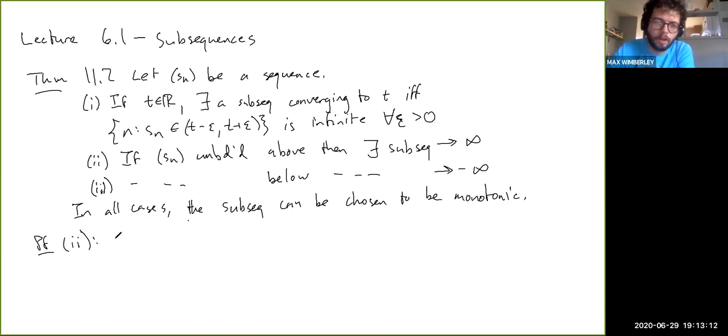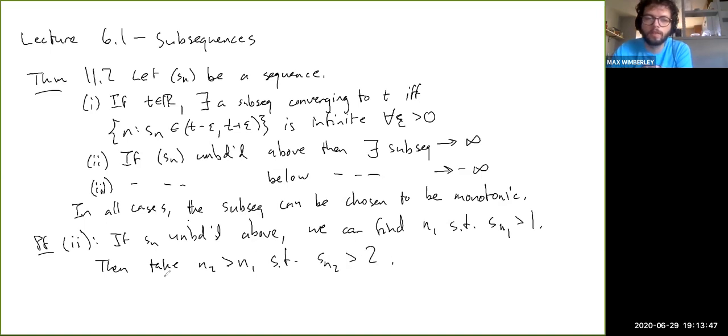And in these, in all, so the first case deals with finite limits, and then the second two are infinite. And in all cases, the subsequence that this theorem tells you exists can be taken to be monotonic. And so this monotonicity thing will make the proof like a little bit more complicated, but it's really not that bad. So the second two cases are, I would say, relatively easy. So let's just look at case two, or not cases, but the parts of the theorem.